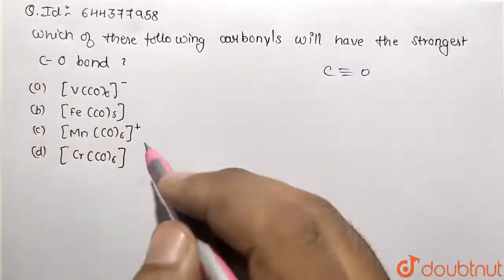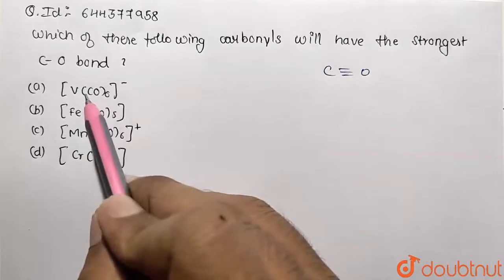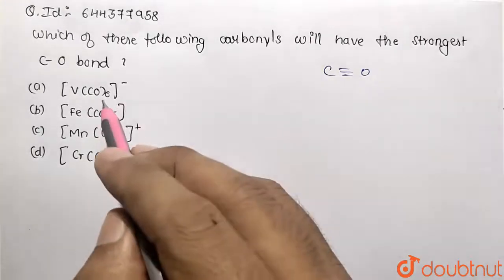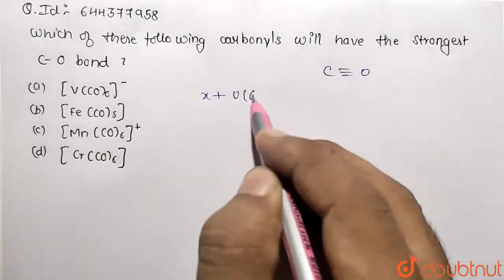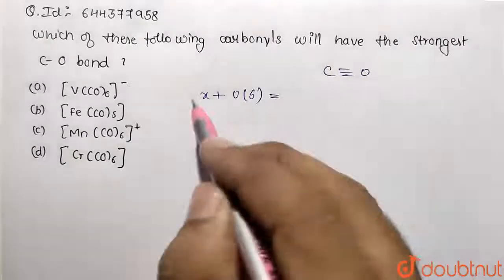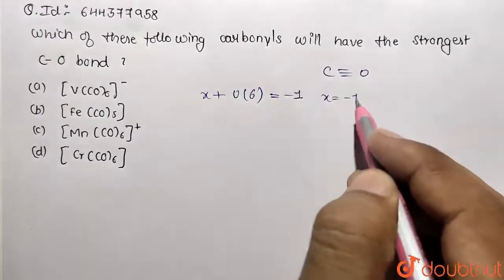Let's work upon the following complexes where they have given. If I calculate the oxidation state of central atom, carbonyl is neutral ligand so 0. So x plus 0 multiplied by 6 will be equivalent to overall charge of minus 1. So value of x turns out to be minus 1.